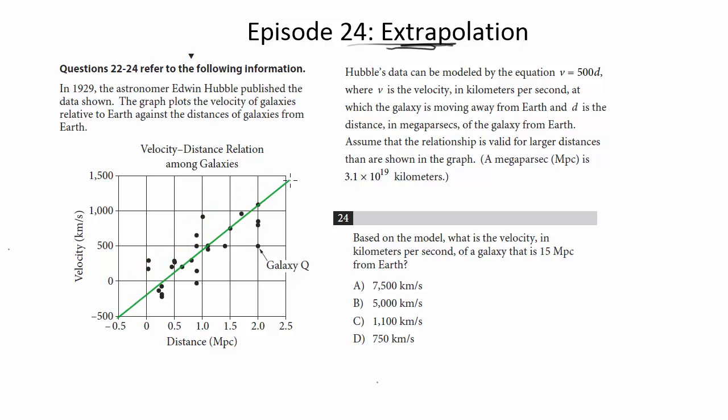So maybe it would look something like that. And if I extended this line and I kept going, I would eventually get to the point where the x value or the distance value would be 15. And then I could find the measure of the velocity value by reading the value of the line in the y-axis, which would be obviously much higher than 1500.